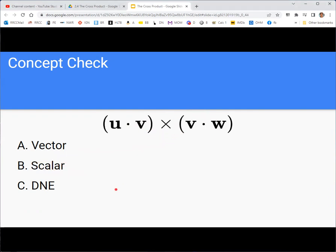How about this one? This one does not exist, because again, you would use what's inside parentheses first. So u dot v, that's a scalar, v dot w, that's a scalar. And you can't take the cross product of two scalars. Cross product is only defined in terms of vectors. So this is undefined, doesn't make sense, and so c does not exist.